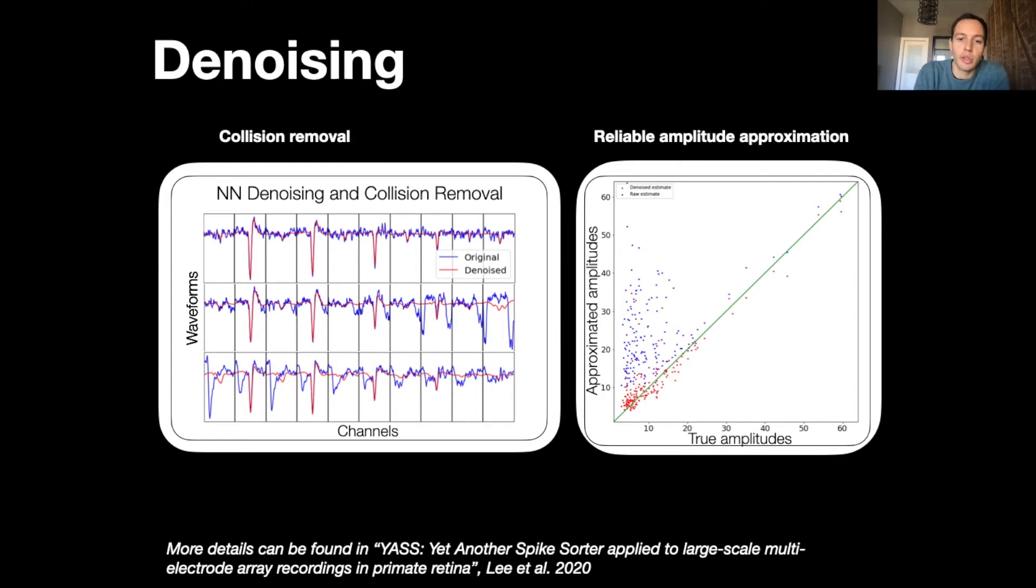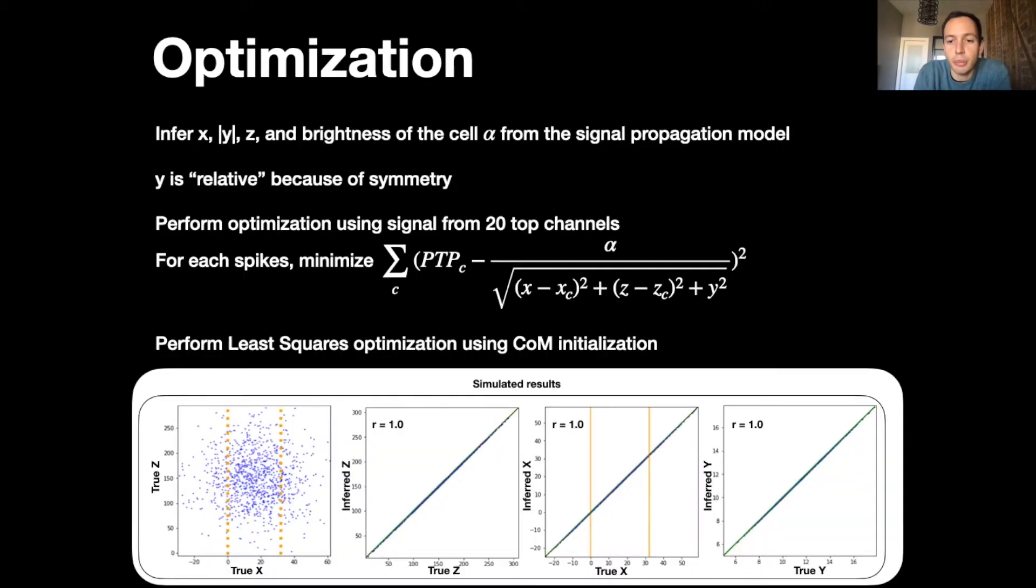So now that we have the correct amplitude for the waveforms, the next step is to perform triangulation and infer the parameters X, Y, Z that corresponds to the 3D locations and alpha which corresponds to the brightness of the cell. Note that the Neuropixel probe is in a plane, and so it's not possible to determine on which side of the probe the neuron will be, so then Y is relative. We look at the signal amplitude on 20 channels located around the main channel of the spike and we minimize the sum of squared differences between the amplitude on each channel and alpha divided by the distance of the neuron to this channel to infer X, Y, Z and alpha.